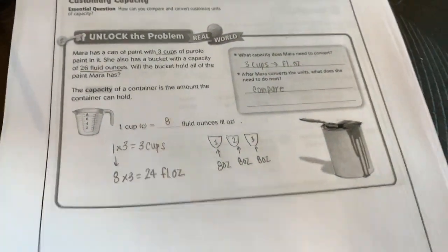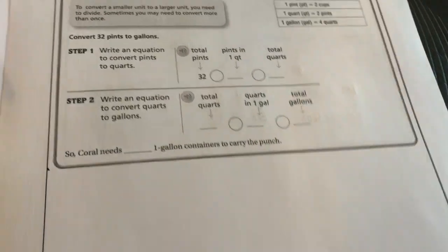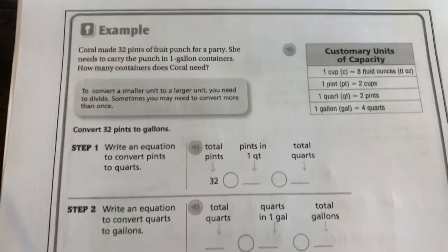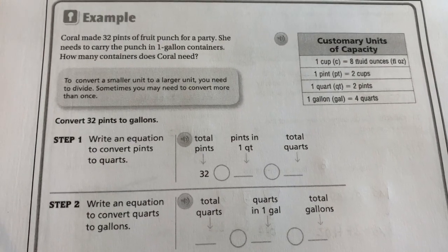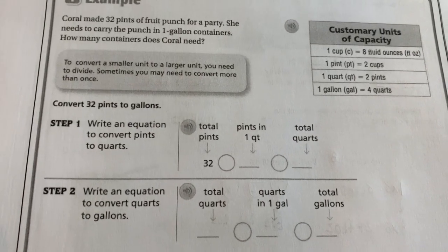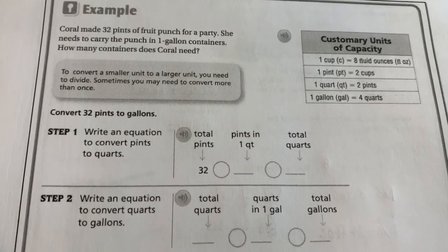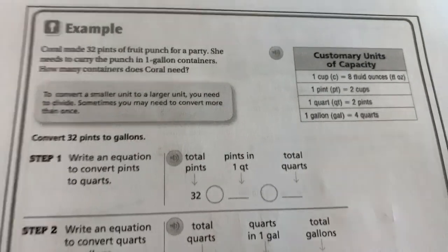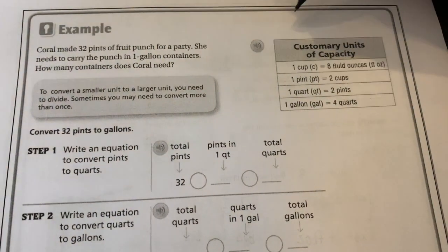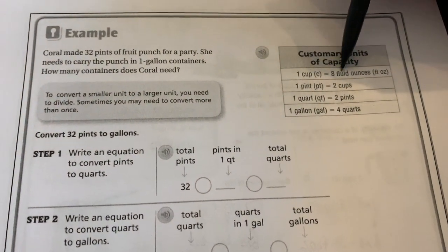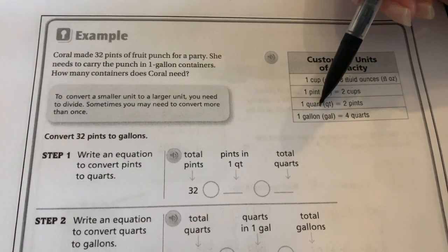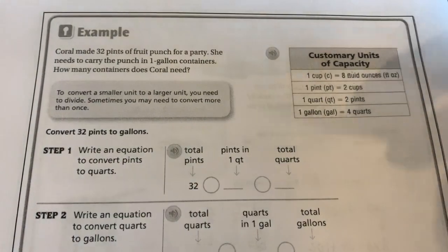Our first example shows that sometimes you have to convert multiple units — you can't always do just one conversion. Here's the chart of the most common customary units of capacity: one cup equals eight fluid ounces, one pint equals two cups, one quart equals two pints, and one gallon equals four quarts.